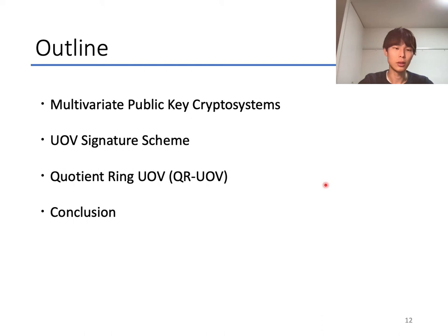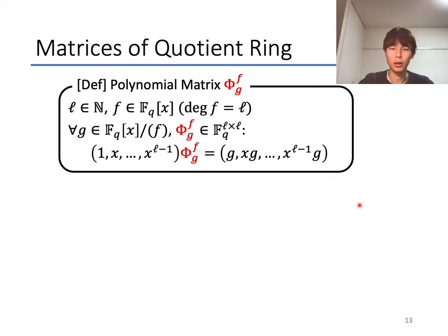Next, about our proposed quotient ring UOV. Here, I introduce polynomial matrices. Let ℓ be a positive integer and f be a polynomial in F_q[x] with degree ℓ. Then, for any element g in the quotient ring F_q[x]/(f), we can uniquely define an ℓ times ℓ matrix Φ_g^f over F_q satisfying this equation.